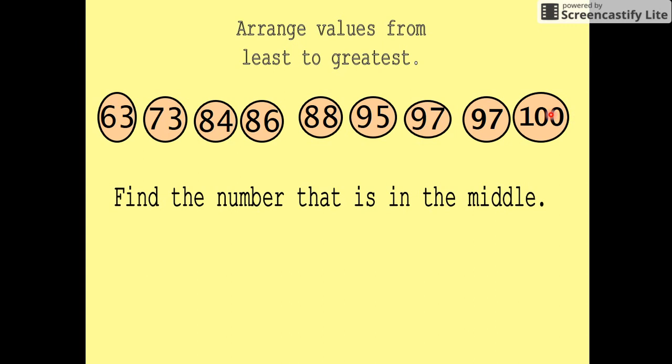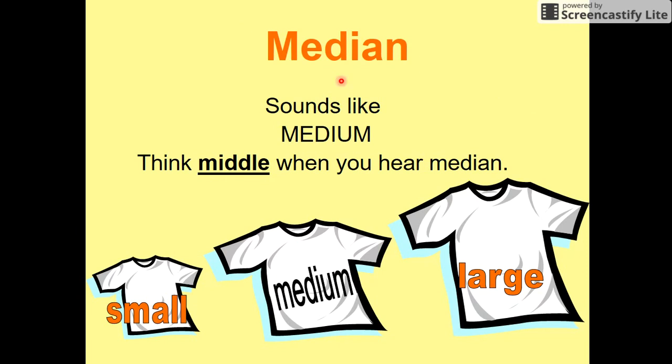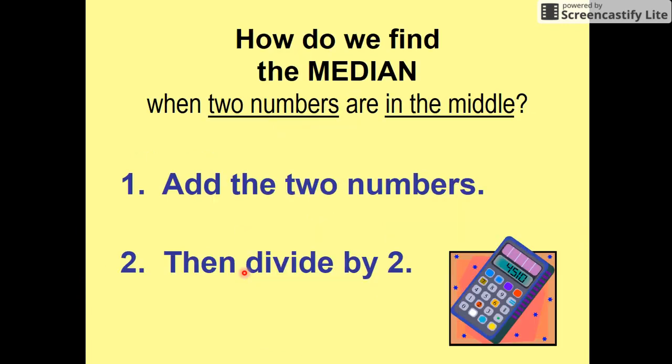So we go 63, 73, and we look at the middle one. That's one, two, three, four; one, two, three, four. So our middle one is 88—that's our median. The median is 88. Half the numbers are less than the median and the other half are greater than the median.